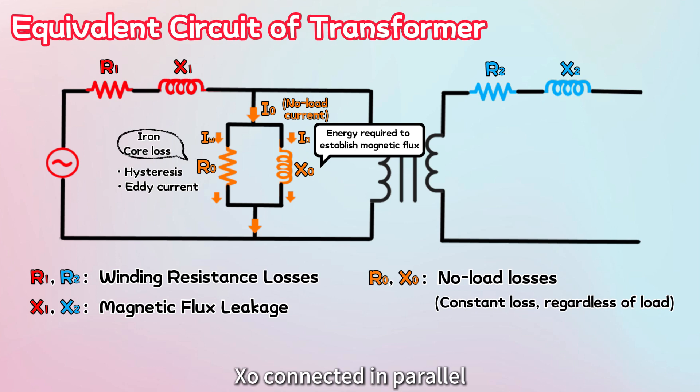X0, connected in parallel, represents the losses due to the magnetizing current needed to establish the magnetic flux in the core.